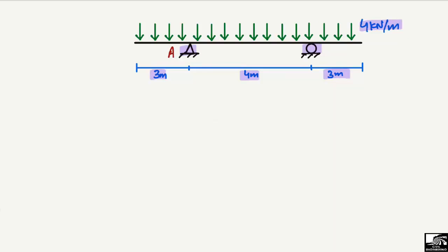Support A is a hinge support, so it will take the vertical reaction and also the horizontal reaction — but the horizontal reaction will be zero because there is no horizontal load acting on the beam. Support B is a roller support, so it can take only the vertical load and cannot take any horizontal load.